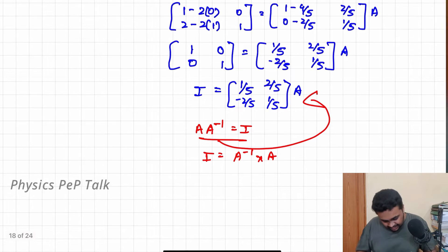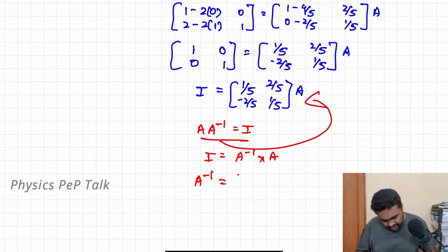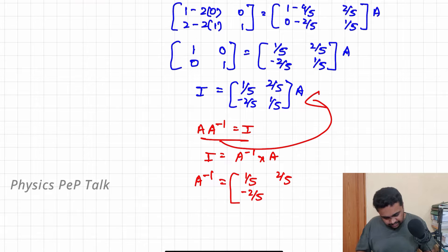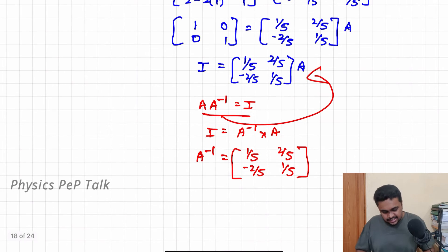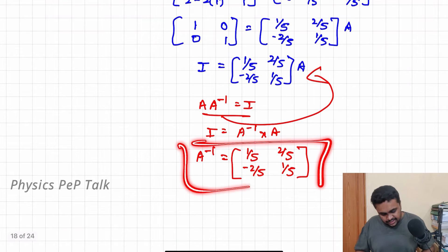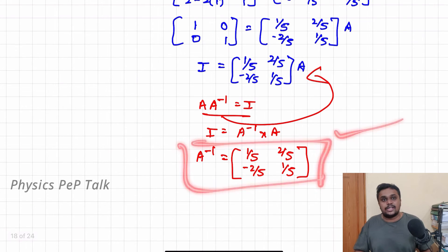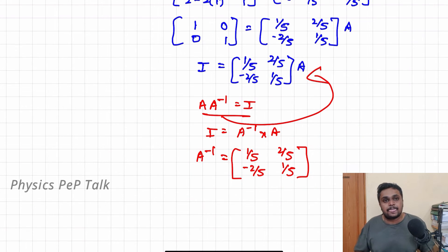So A inverse is equal to the answer. RHS will be [1, 0; 0, 1] — this is an identity matrix. LHS is I, and [1/5, 2/5; -2/5, 1/5] into A. By the property A into A inverse equals I, this matrix is A inverse. So A inverse is equal to [1/5, 2/5; -2/5, 1/5]. This is the required solution. Next problem.